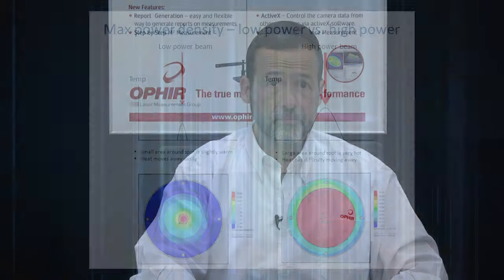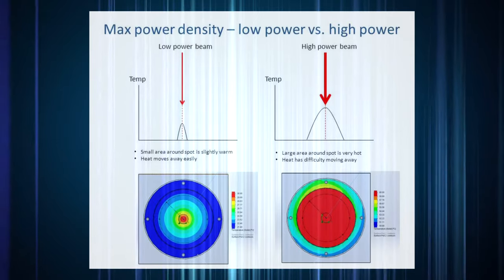The damage threshold of thermal sensors does in fact depend on power level and not only on power density, because the sensor disk itself gets hotter at higher powers. Here you can see the idea visually.